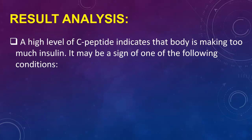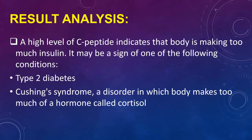A high level of C-peptide indicates that the body is making too much insulin. It may be a sign of type 2 diabetes, Cushing syndrome (a disorder in which the body makes too much of a hormone called cortisol), or a tumor of the pancreas.